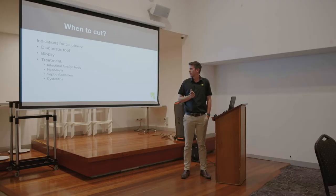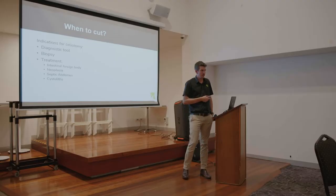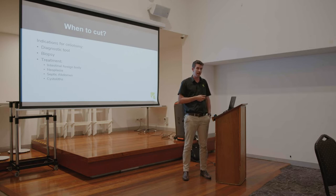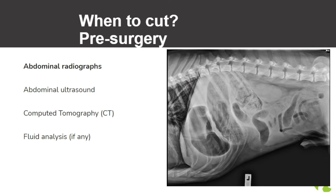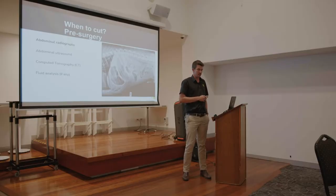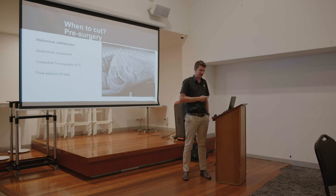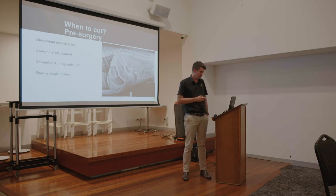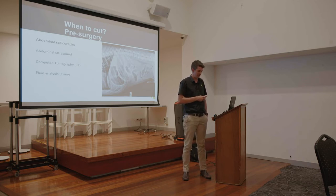We can definitely also use celiotomies as diagnostic tools — we use them quite a lot, typically for our medicine team, for liver biopsies, intestinal biopsies and that sort of stuff. For pre-surgery, the most important thing is making sure the dog is stable and a good candidate for both the anaesthetic and the surgery. Things like blood tests, blood gases, CBCs are important, but tonight we'll focus more on the imaging side.